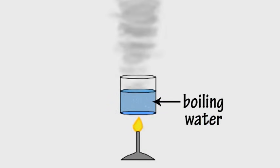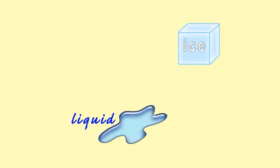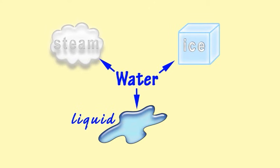What happens when you heat liquid water up until it boils? It turns into steam. Ice, liquid water and steam are different forms of the material water.